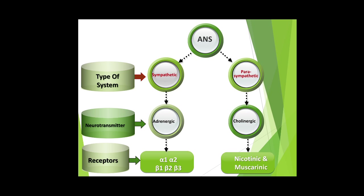The autonomic nervous system is divided into sympathetic and parasympathetic. Sympathetic is also called the adrenergic nervous system and parasympathetic is also called the cholinergic nervous system. The neurotransmitters in the sympathetic nervous system are adrenaline and noradrenaline — also called epinephrine and norepinephrine respectively. The parasympathetic neurotransmitter is acetylcholine.